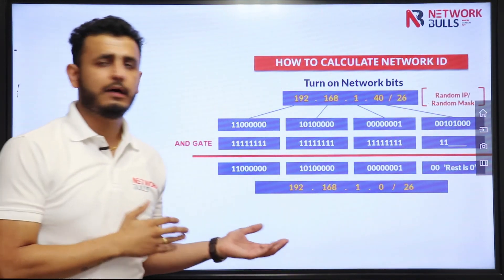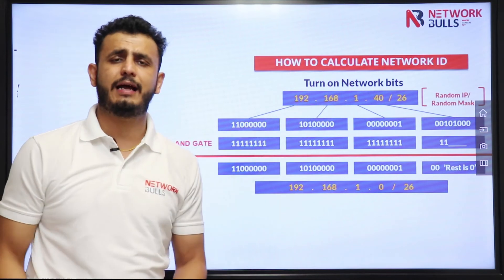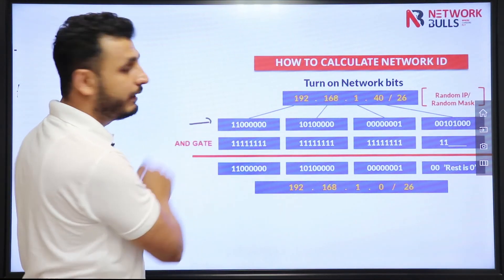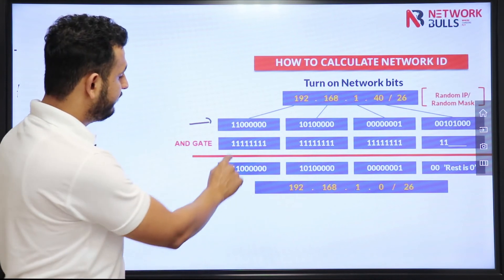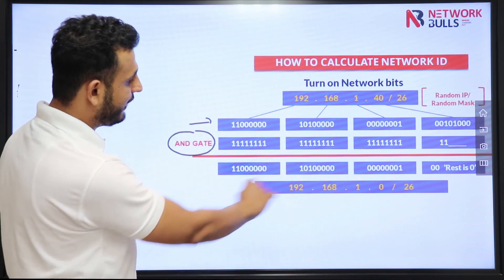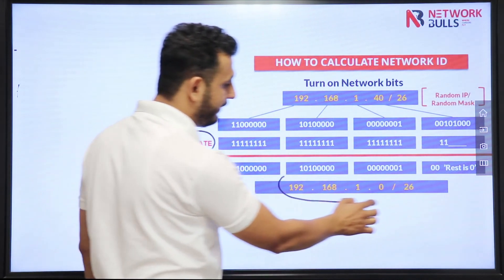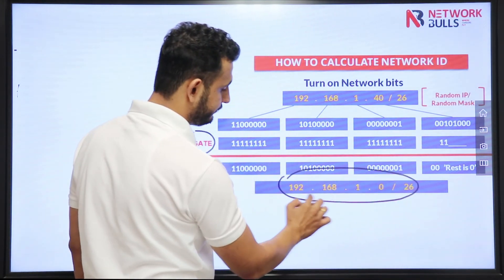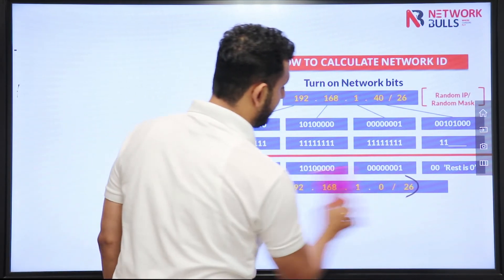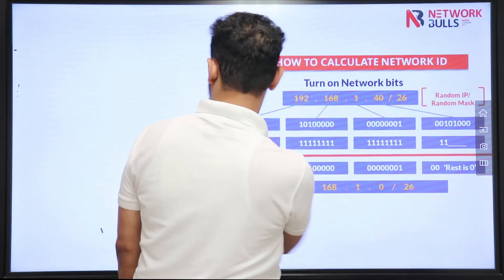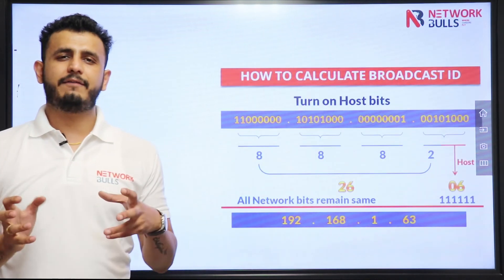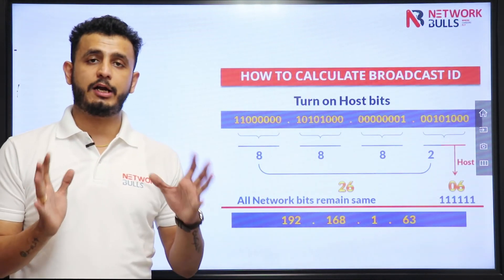Now, concentrate here. I have IP 192.168.1.40 with subnet mask 255.255.255.192. I convert the IP to binary, apply AND gate with the subnet mask, and calculate the network ID in the same manner as before.